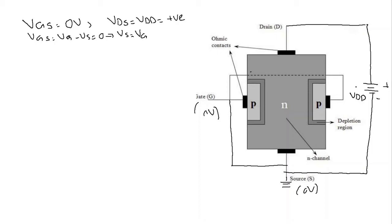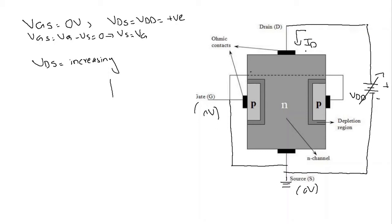In this video we are going to discuss about the pinch-off voltage and then the graph between Id versus Vds. This Vdd is a variable source, so Vds is going to be increasing. When Vds is increasing, the conventional current Id is also going to be increasing, because according to Ohm's law when voltage increases the current increases proportionally. So with increasing Vds, Id is increasing and the depletion region is also becoming wider and wider.